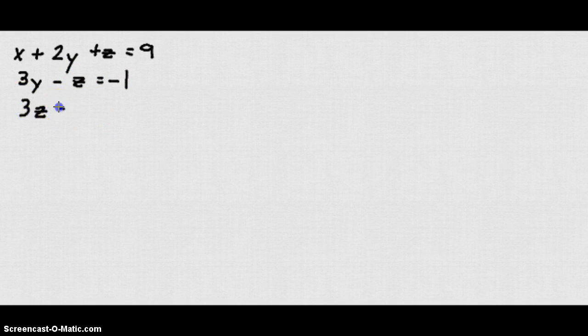So let's say we have this system of equations. We have x plus 2y plus z equals 9. We have 3y minus z equals negative 1. We have 3z equals 12.